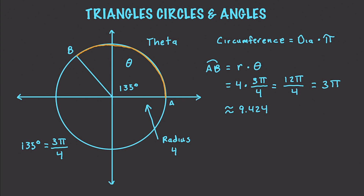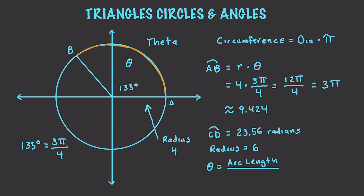On the other hand, let's say we know arc CD has a length of 23.56 radians and the radius is equal to 6, and we want to find the angle theta. We take the arc length and divide it by the known radius: 23.56 ÷ 6 ≈ 3.926 radians.